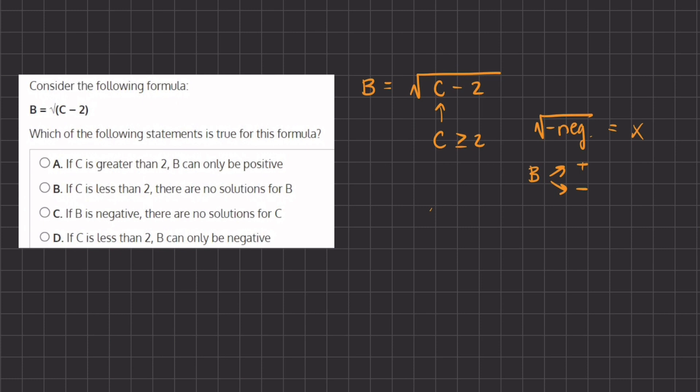Now we can move on to our statements. Statement A states: if c is greater than 2, b can only be positive. Well, that is incorrect because we just proved that if c is greater than 2, then b can either have a negative answer or a positive value. So therefore, A is incorrect.